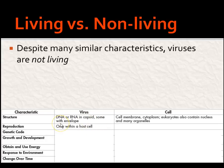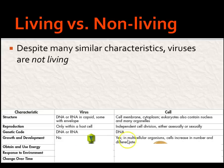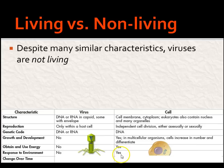Reproduction: viruses can't reproduce on their own — they have to be inside a host cell. Cells can definitely reproduce on their own through independent cell division, either asexually or sexually. Genetic code: viruses use DNA or RNA, while cells use DNA only. Growth and development: viruses don't grow or develop, they just reproduce. Cells in multicellular organisms increase in number, differentiate, and change. Obtaining and using energy: viruses don't eat or produce waste — they just take over and reproduce. Cells do eat and produce waste. Responding to environment: viruses have no idea what's going on — they don't have the capacity to respond. Cells can move toward or away from things. Change over time: yes, viruses do evolve — this is why you need a new flu shot every year.